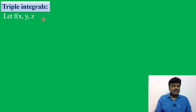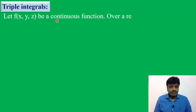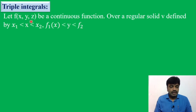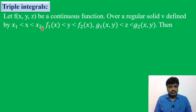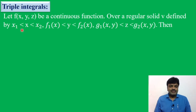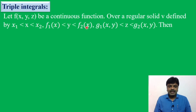Let us see the definition. Let f be a continuous function. So far we have two variables; now we have three variables. Over a regular solid V defined by x1 less than x less than x2 — here x limits are x1 and x2, these two are constants. Then f1 of x less than y less than f2 of x, so y limits are functions of x.